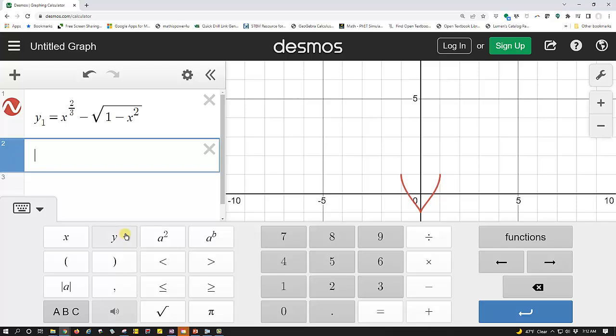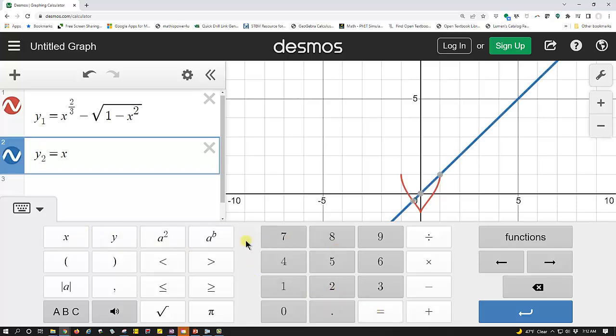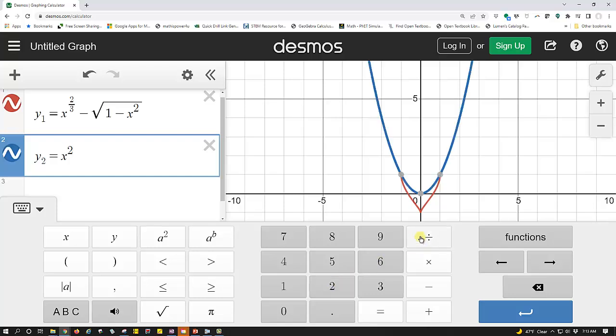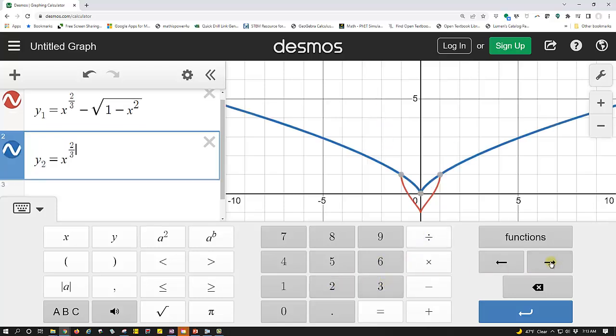In cell two, we enter y2 equals x to the power of two divided by three, right arrow, right arrow. Instead of minus, we enter plus the square root of the quantity one minus x squared, enter.